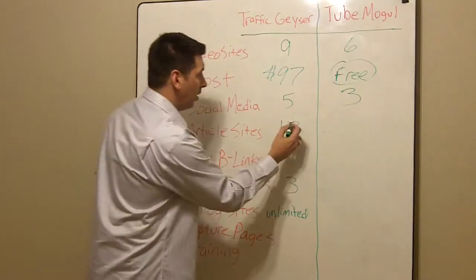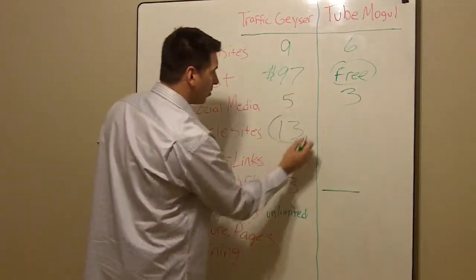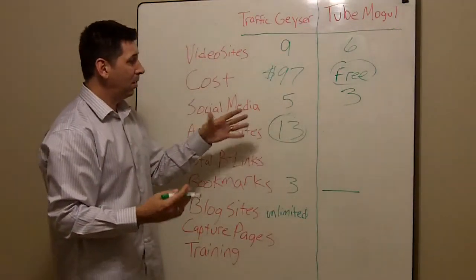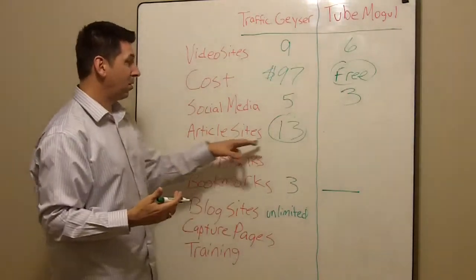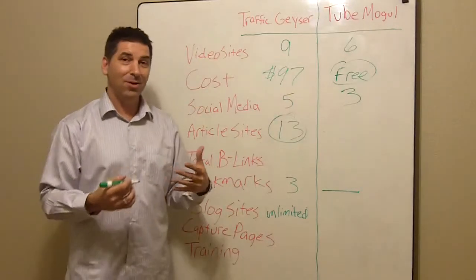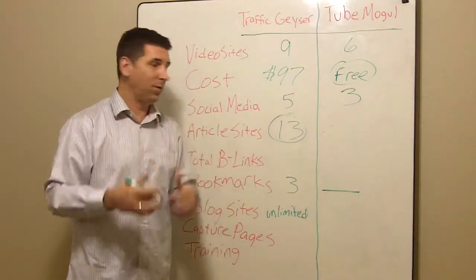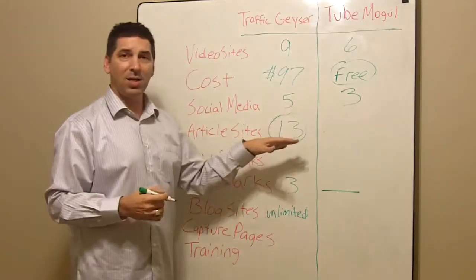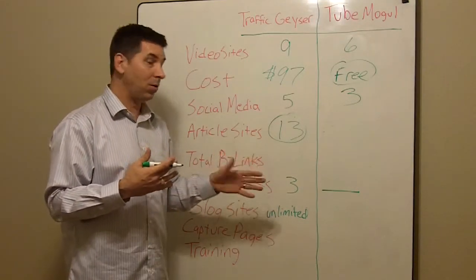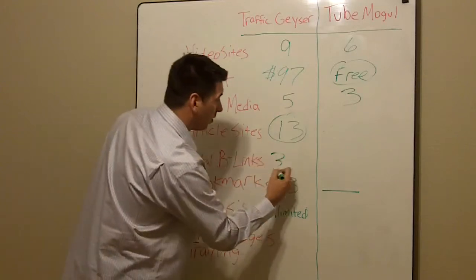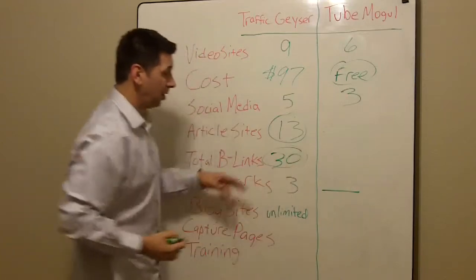This is where the rubber meets the road — TubeMogul does not submit to any social bookmarks. For article sites, Traffic Geyser does everything. You can submit your article and they have templates where if you've written an article and you want to submit it out to 13 different article sites, you can put all your text in there, one description, one title. They'll spin the title if you need to, and you can submit that out to 13 different sites. You can put backlinks for your article or video to all these.